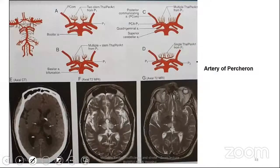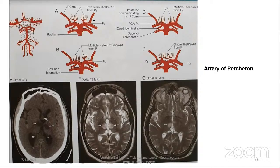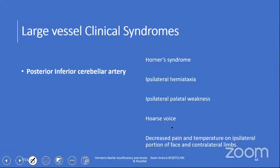Next is the artery of Percheron — a single artery arising from the P1 segment that supplies both thalami. In normal anatomy, two stems come from P1 with multiple perforators. The artery of Percheron is a single artery that can give rise to bilateral thalamic infarcts, which has a differential diagnosis on imaging. The posterior PICA syndrome: Horner's syndrome, ipsilateral hemiataxia, ipsilateral palatal weakness, forceness of voice, decreased pain and temperature sensation on the ipsilateral face and contralateral limbs.